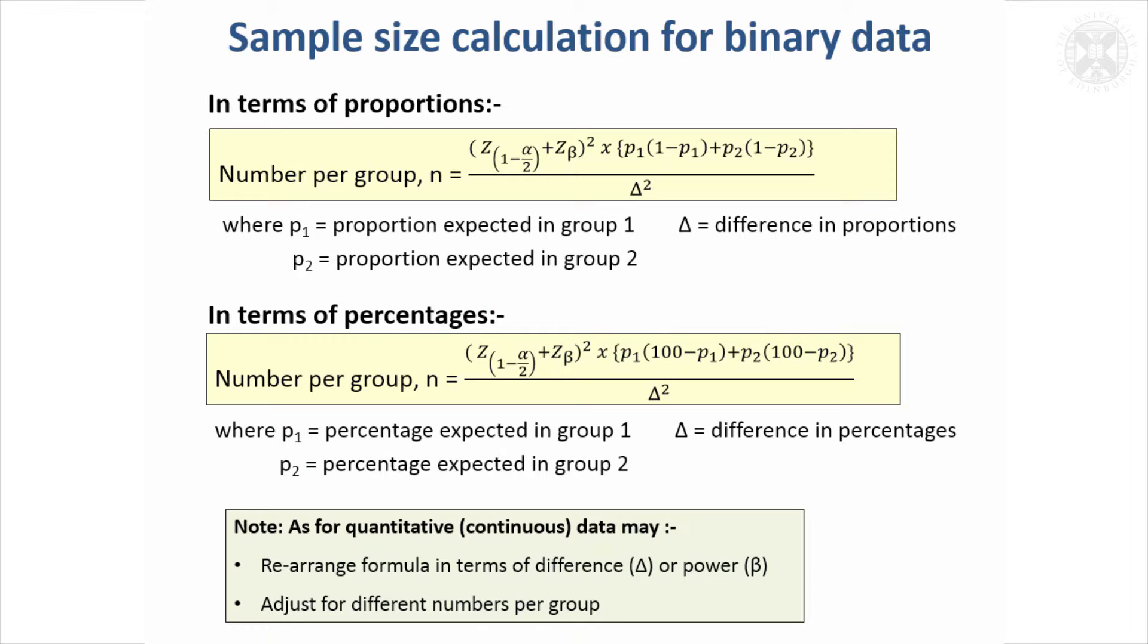And as the formulae we had before for quantitative continuous data, it's possible to rearrange this formulae so it's in terms of either delta or the power. So for a given number of animals or sample size, we can calculate what difference in probabilities we're likely to be able to detect.